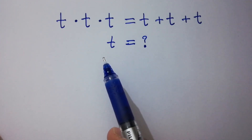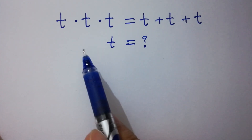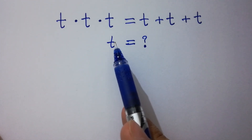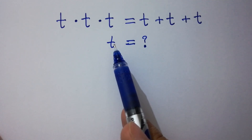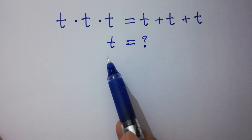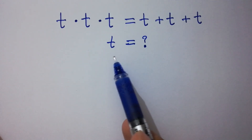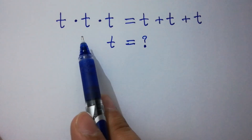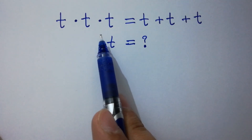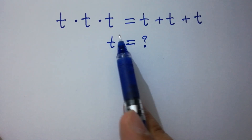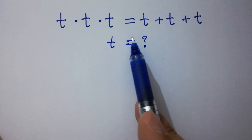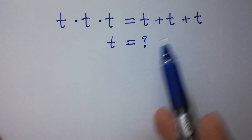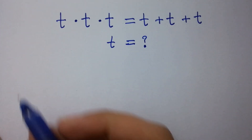Hello friends, we have a nice math olympiad algebra problem. Find the value of t if t times t times t equals t plus t plus t. Let's have a solution.